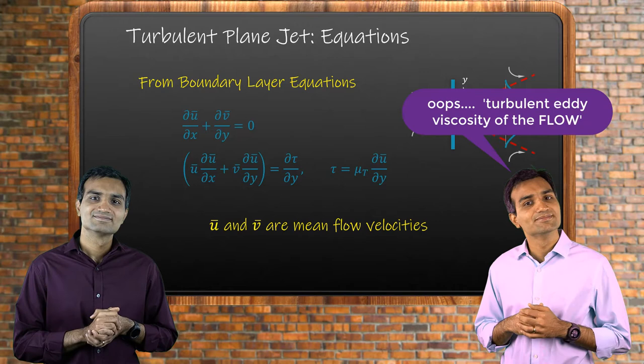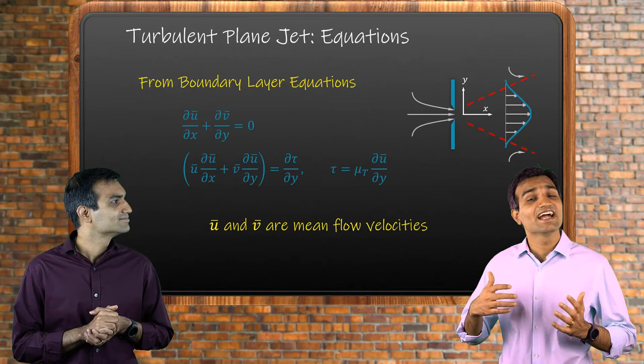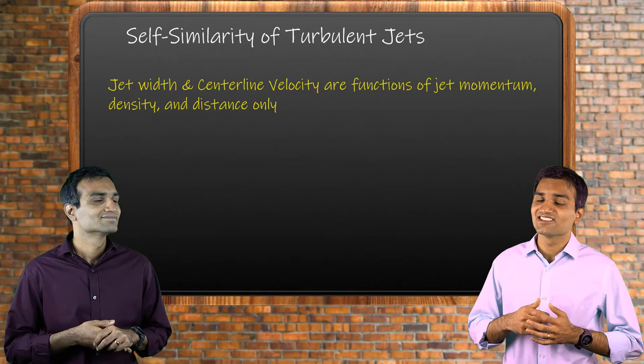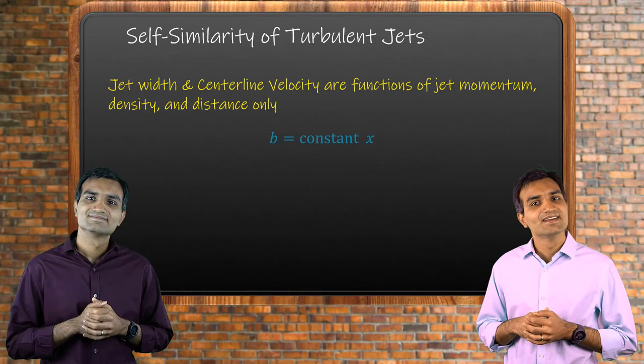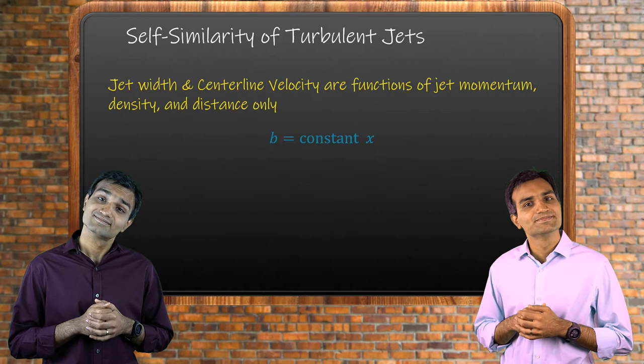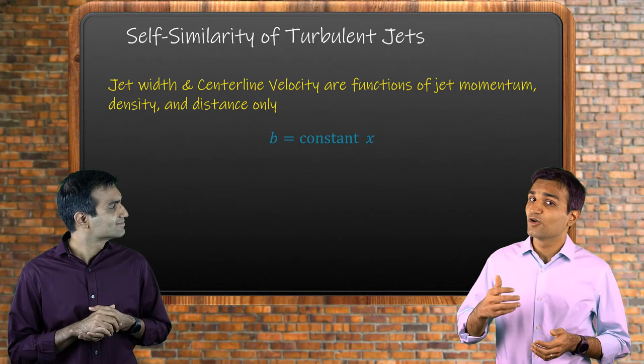For turbulent jets, the centerline velocity and jet width are functions of jet momentum, density, and distance. As there are no walls, these variables are not influenced by the molecular viscosity of the fluid. Dimensional analysis of the momentum equation gives us the following results for plane and axisymmetric jets.